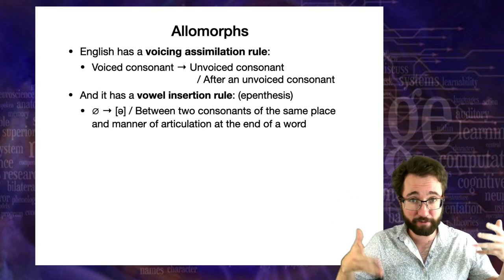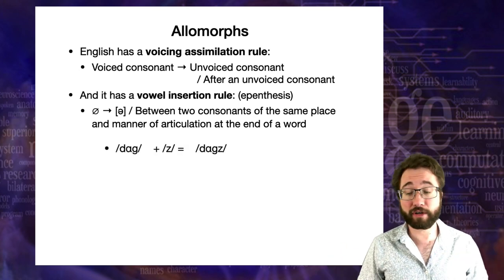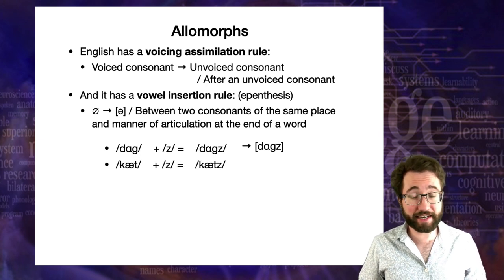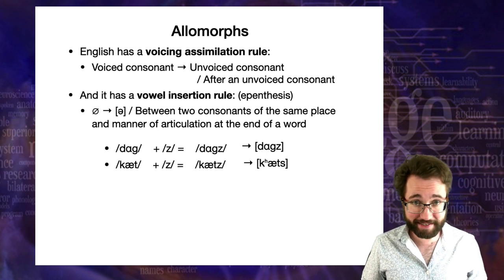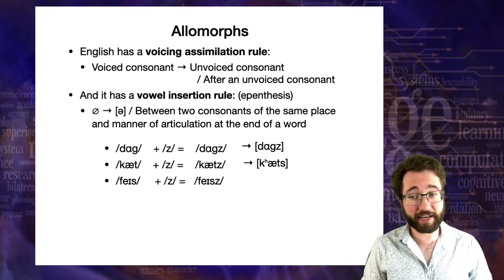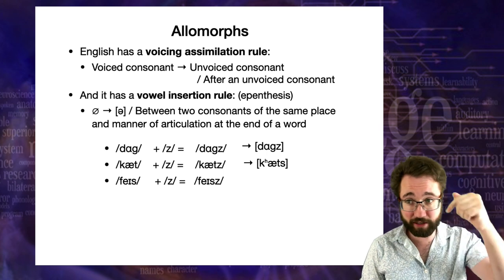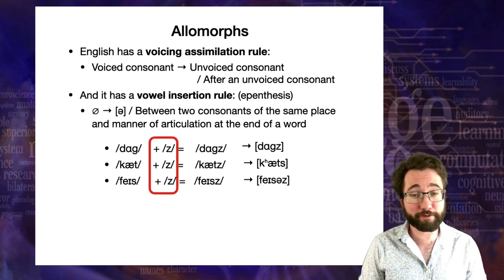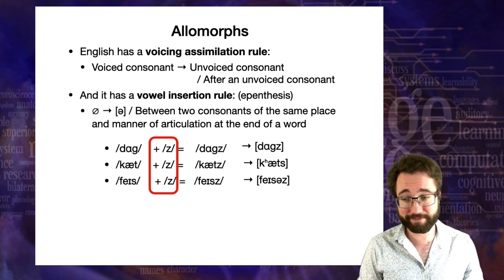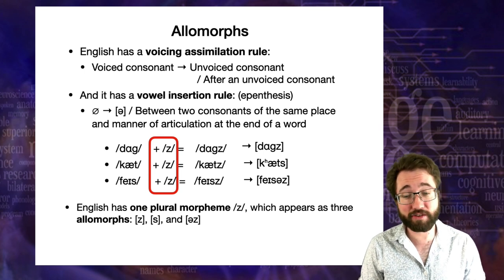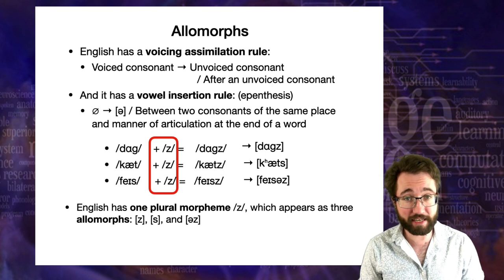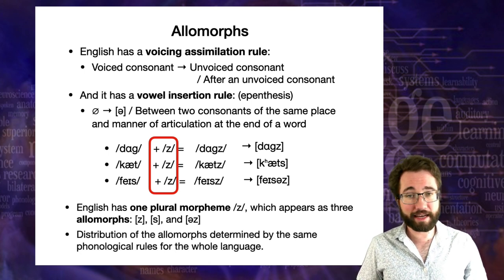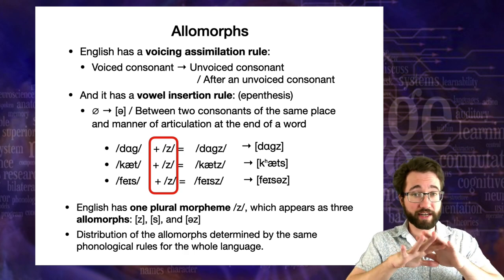We can verify this by running a Z morpheme through the same phonological rules that applied to past tense marking — these rules apply everywhere in English. Take 'dog' plus Z: we get 'dogs'. Take 'cat' plus Z, run it through the voicing assimilation rule, and we get 'cats'. Take 'face' plus Z: we get something that violates English phonotactics, so we insert a vowel using the vowel insertion rule and get 'faces'. The underlying phoneme for plural marking in English is Z, which appears as three allomorphs — Z, S, and UZ — depending on the phonological context of the root.